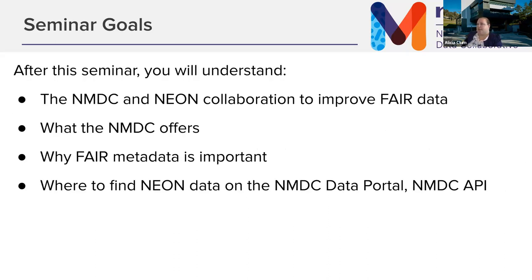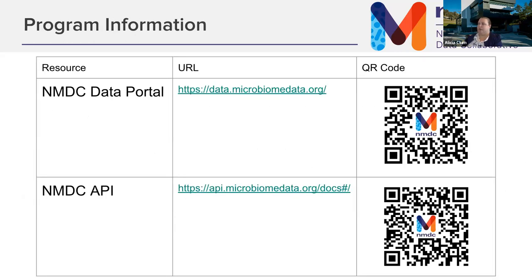After the seminar, you'll be able to understand how NEON and NMDC are collaborating to improve FAIR data, what the NMDC offers, why FAIR metadata is important, and where to find NEON data on the NMDC data portal and the NMDC API. These are the two resources we'll be talking about today: the data portal and the API for programmatic access.